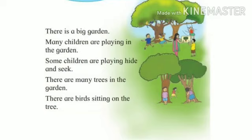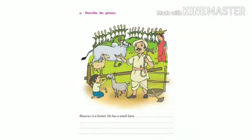In this way, you can write many sentences by looking at the picture. Here, you have another picture where you can see a farmer in his farm. The farmer's name is Bhau Rao. Try to write five to six sentences describing this picture in your Balbharti book.